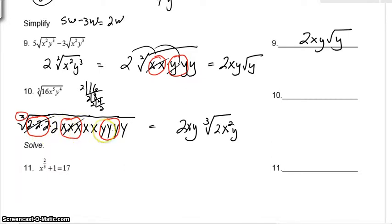So just double checking, I made 3 circled groups. I'm going to have to pull out a 2, an x, and a y. I've done that. Inside, I didn't circle the 2 x's and a y. I have 2 x squared y. Don't forget, this is still a cube root. Don't write this as a square root. That would definitely not be correct.